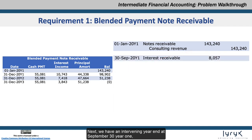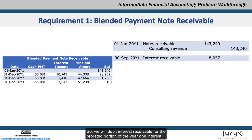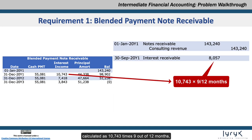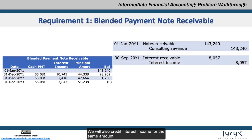Next, we have an intervening year-end at September 30th Year 1, where we must accrue interest receivable from the date of the note. We will debit interest receivable for the prorated portion of the Year 1 interest, calculated as $10,743 times 9 out of 12 months — January 1st through September 30th inclusive — which results in interest receivable of $8,057. We will also credit interest income for the same amount.